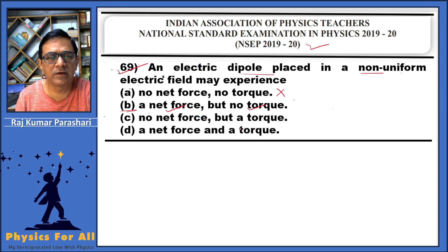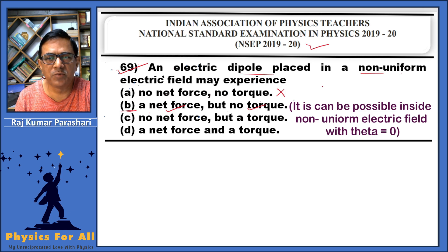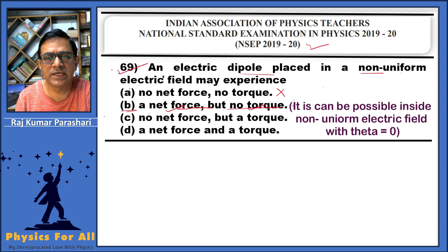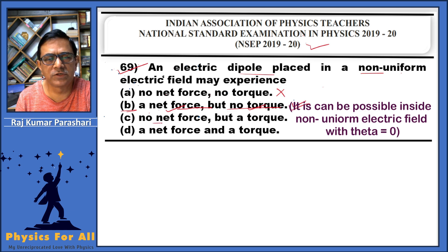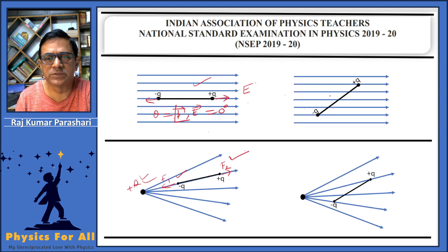However, these forces act along the radial direction, and that is why there is no torque acting on the electric dipole. Thus, when an electric dipole is placed inside a non-uniform electric field, there exists a net force but no net torque. So option B is correct. For option C, there is no net force but there is a torque.